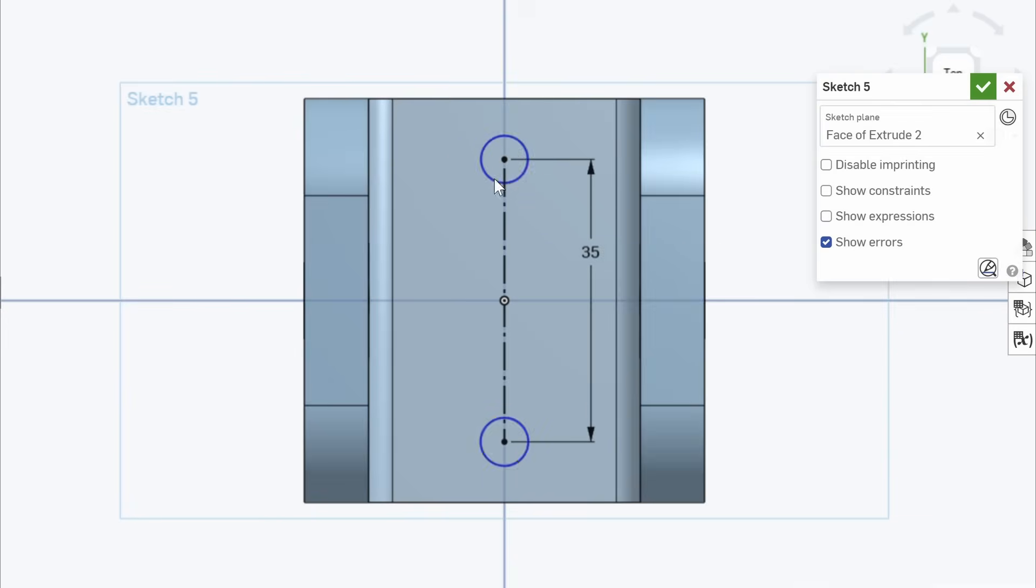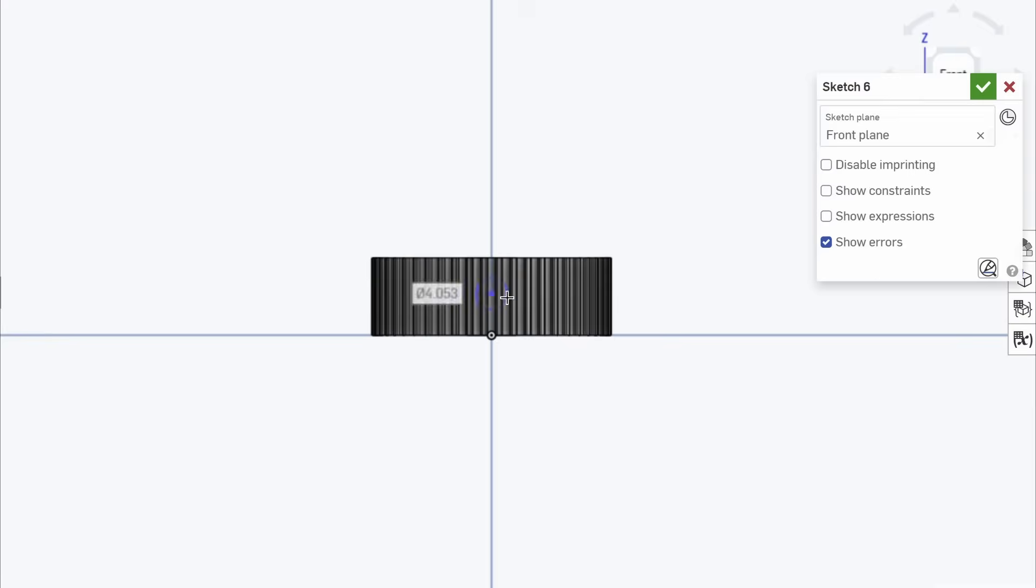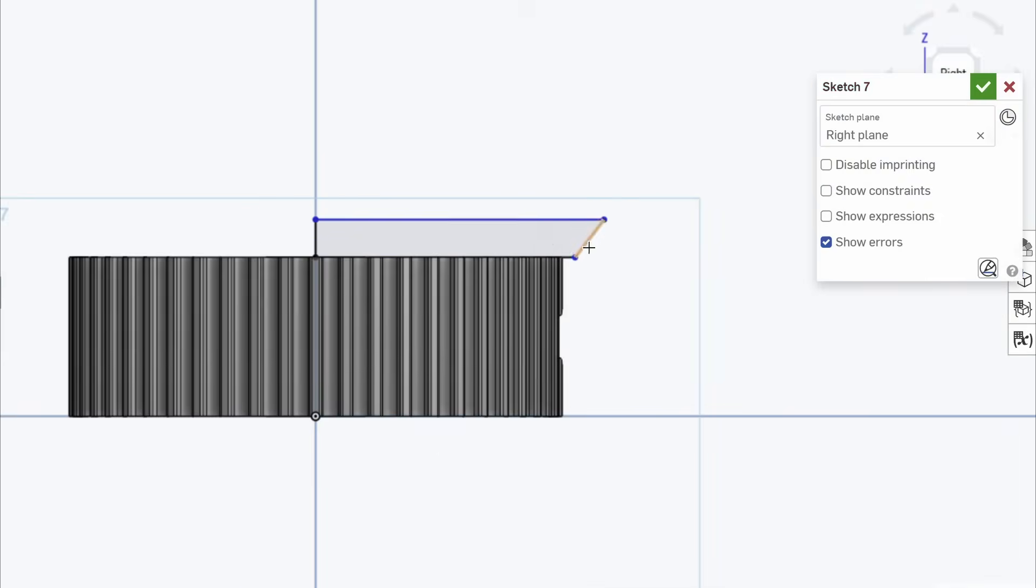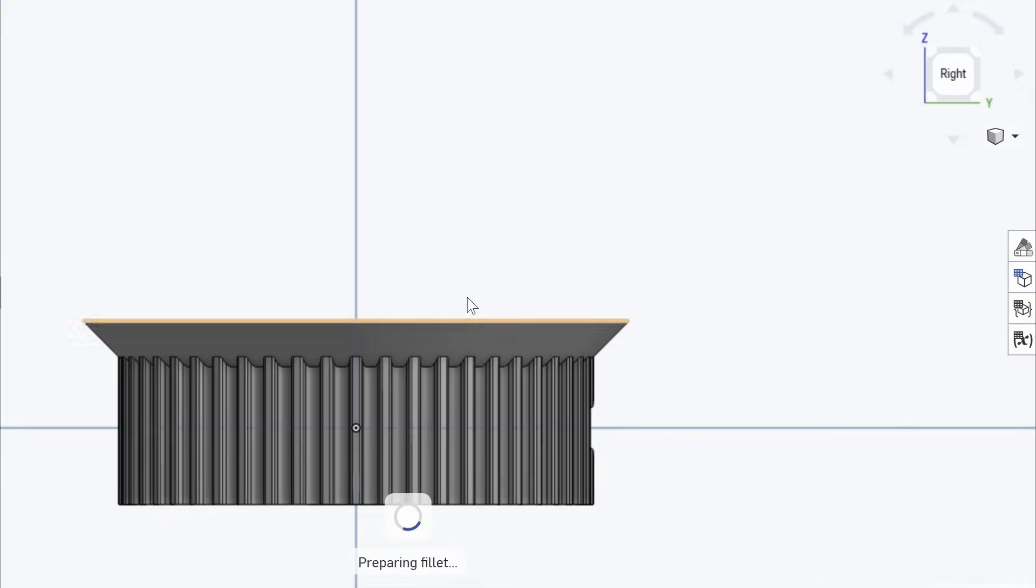Sometimes when I'm working in CAD, I make up the dimensions as I go. Then I come back later with calipers, measure the components, and update the dimensions. If these parts look slightly different than what you'll see in a moment, that's why.